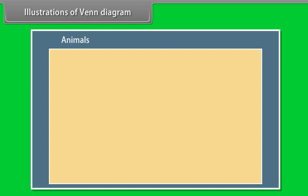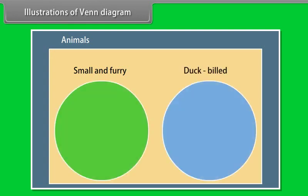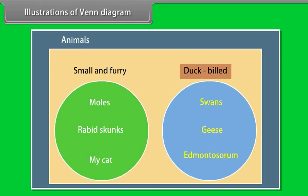Let's say we want to classify things according to being small and furry or being duck-billed. We draw circles to display our classifications. Now we'll fill in or populate the diagram. Moles, rabbit skunks, and my cat are all small and furry. Swans, geese, and Edmontosaurus are all duck-billed. Worms are small but not furry, and horses are furry but not small, and neither is duck-billed. However, they are animals. They fit inside our universe, but outside the circles.